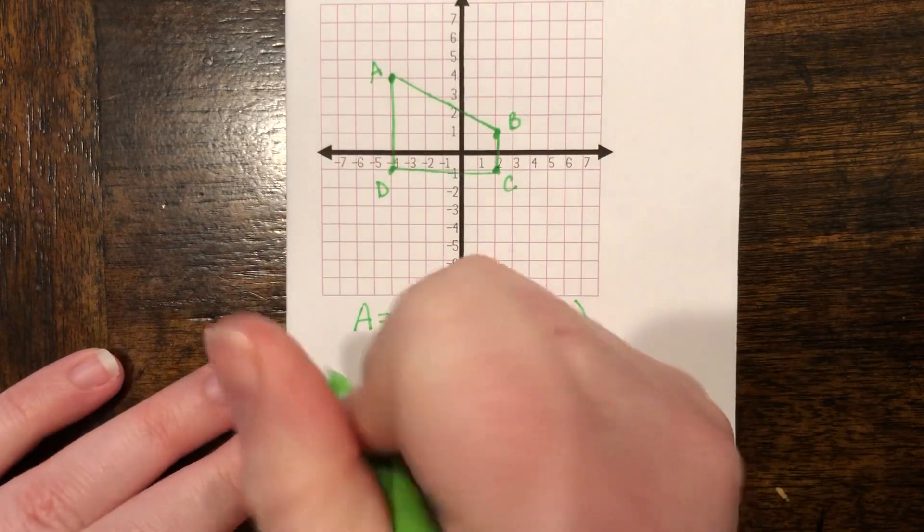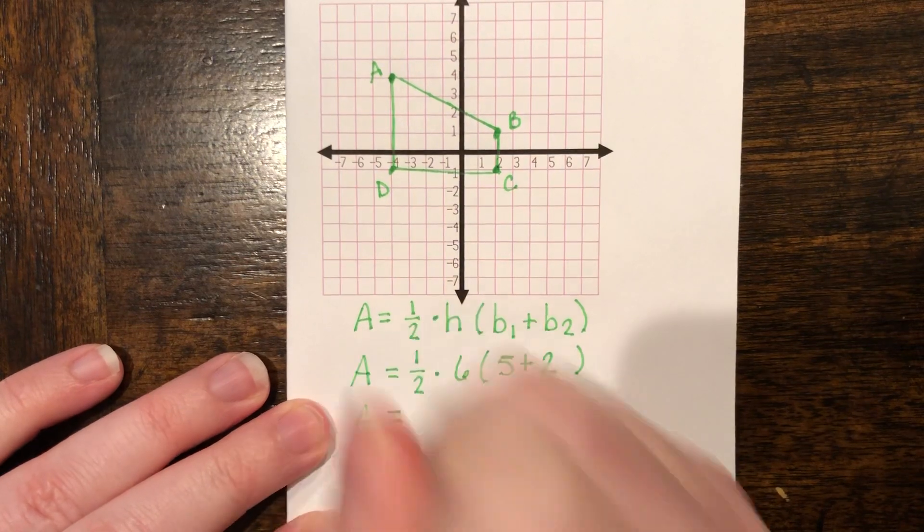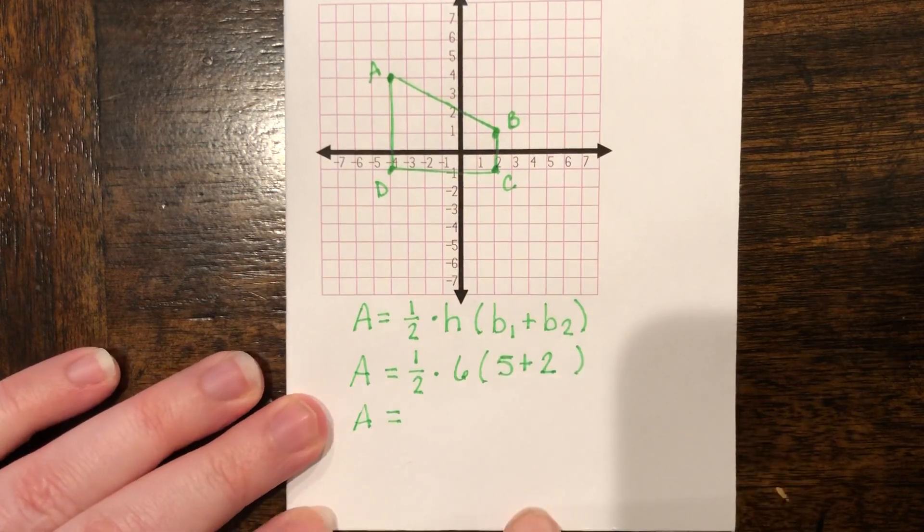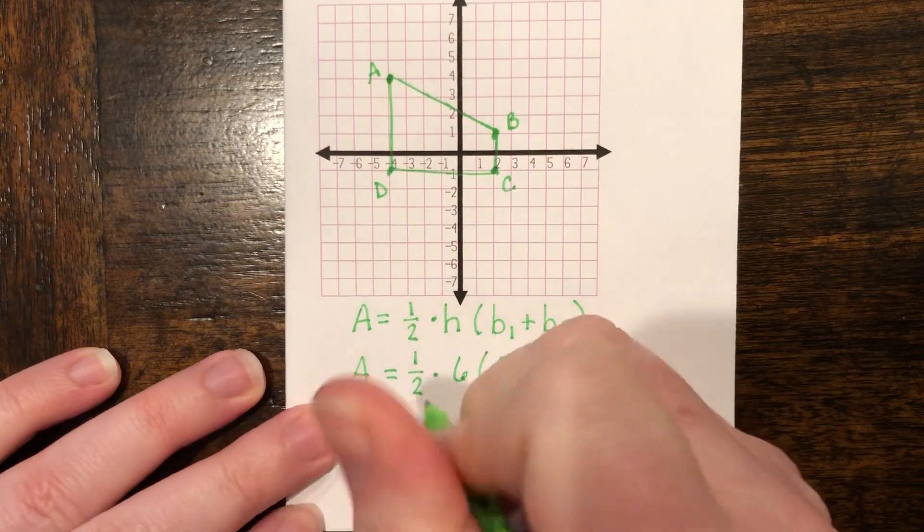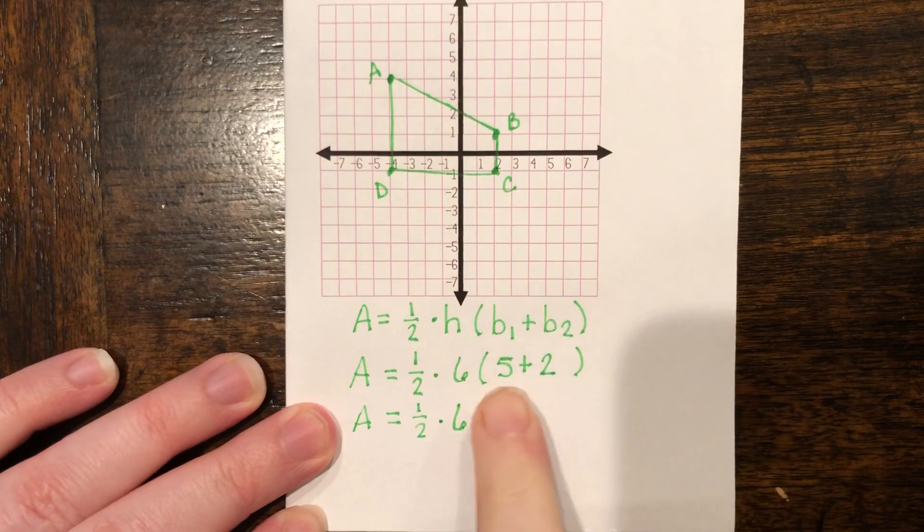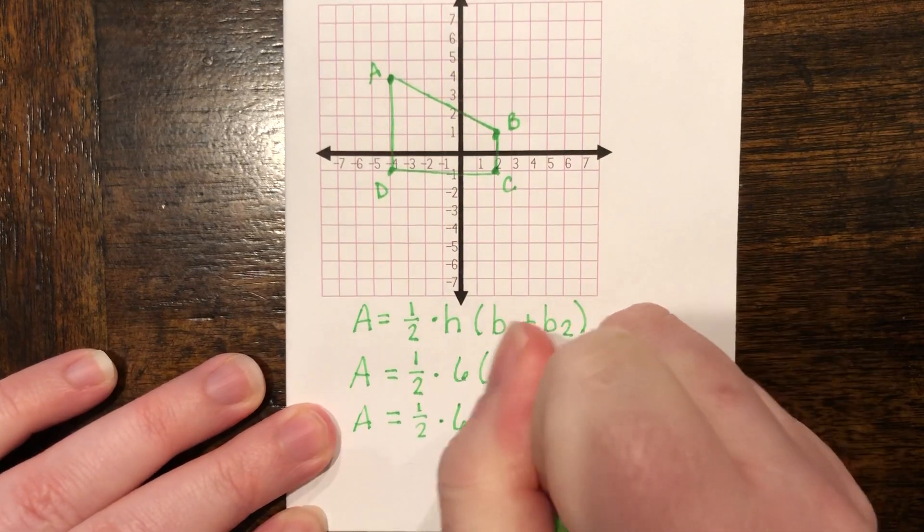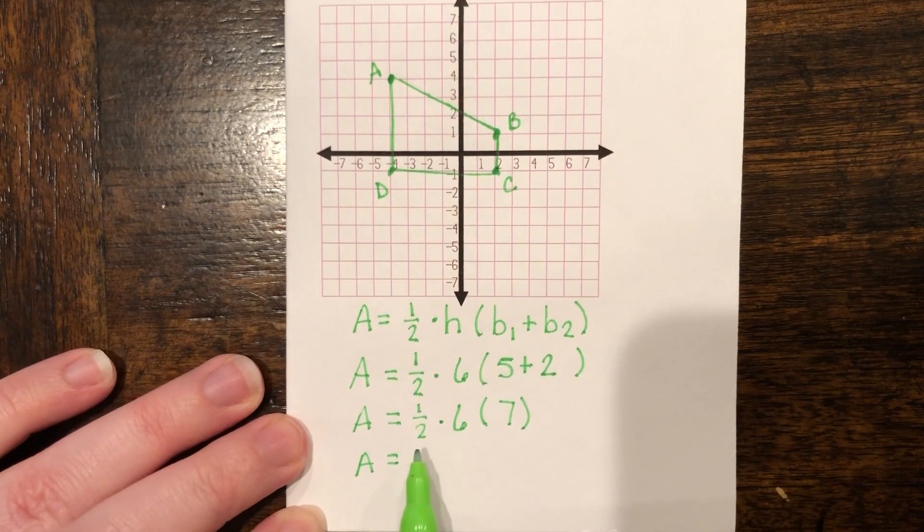And now we just need to solve our equation. So let's go ahead and bring down our area equals. PEMDAS, orders of operations, tells us that we need to do what's in the parentheses first. So let's go ahead and do that. So we have 1/2 times 6, 5 plus 2, which gives us 7. We're going to keep on moving down the line.